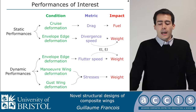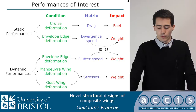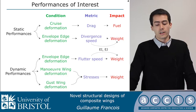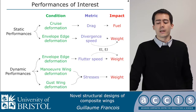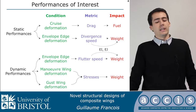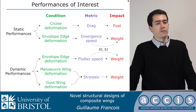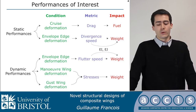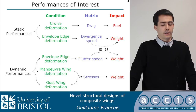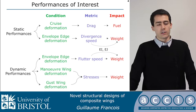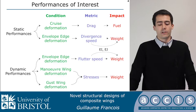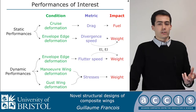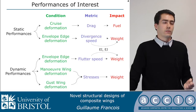Those performances are of two types: static and dynamic. Static performances include cruise deformation, and we're interested in the drag generated by the wing and how it impacts fuel consumption. We're also interested in the edge of the flight envelope and problems such as divergence and flutter in the dynamic case. By tailoring torsional rigidity and flexural rigidity, we can reduce weight. We're also interested in maneuver and gust wing deformation and the stresses generated during those events, since reducing stresses allows us to reduce the necessary structure and therefore reduce aircraft weight.